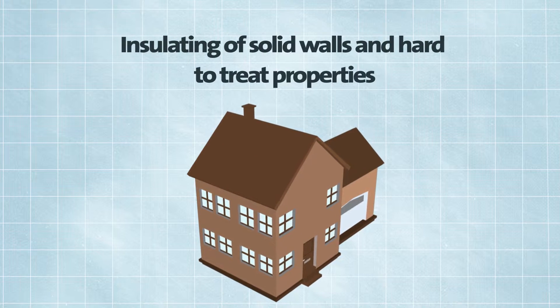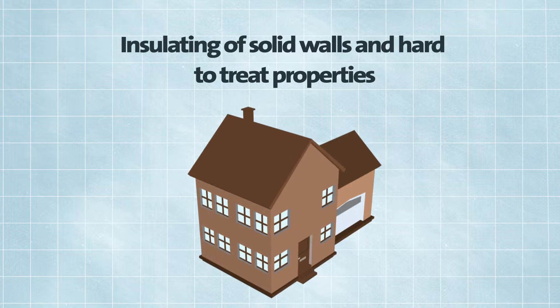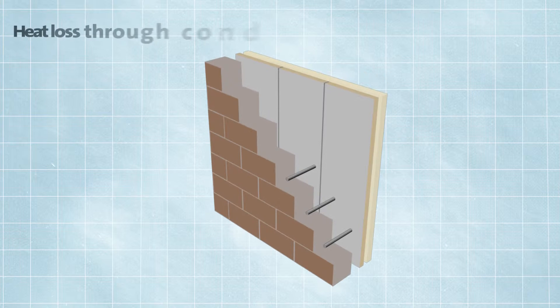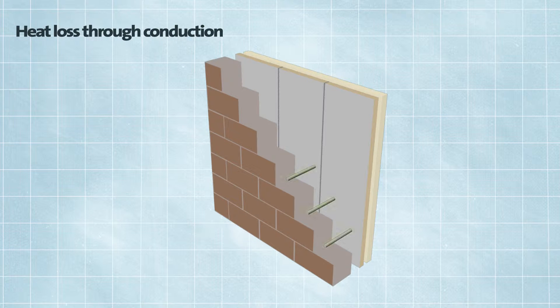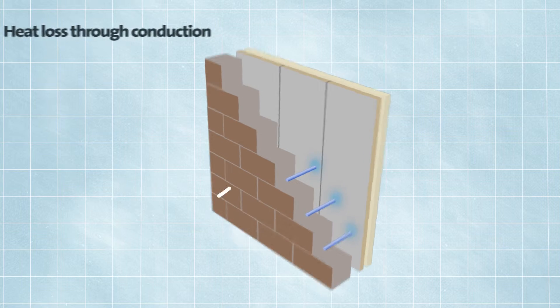Insulating solid walls and hard to treat properties can have a number of issues. Heat loss through thermal bridging is often caused by the use of metal wall ties which can create cold spots.